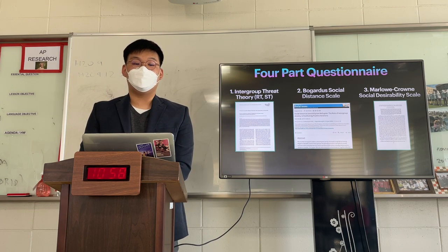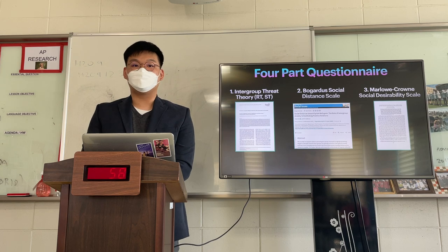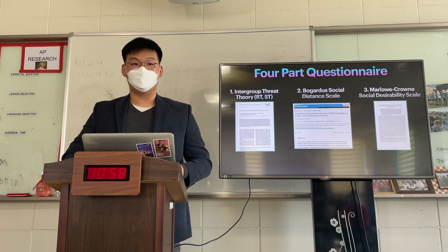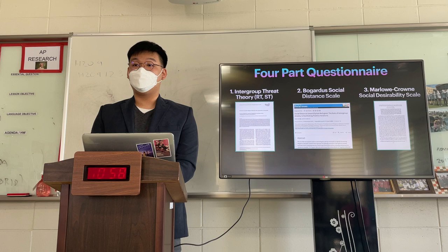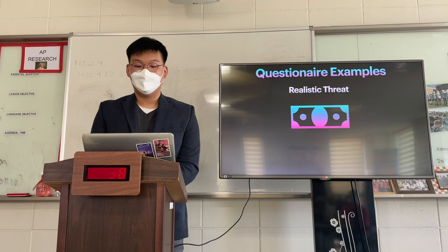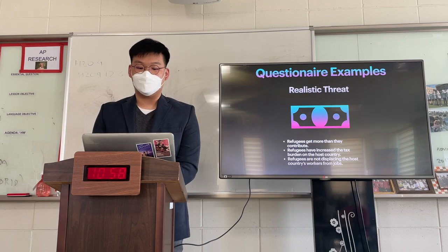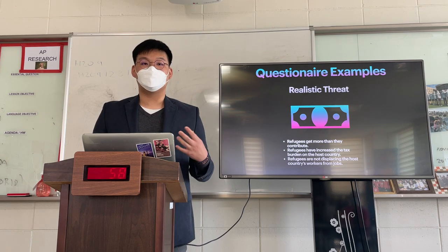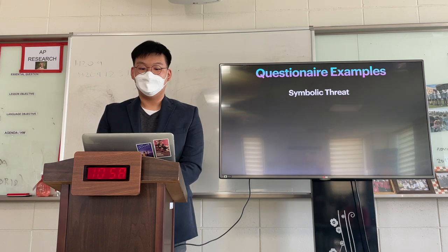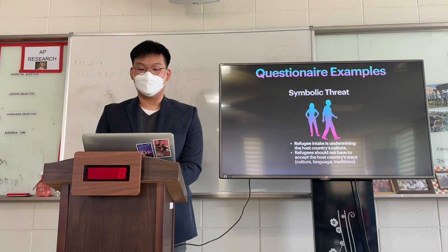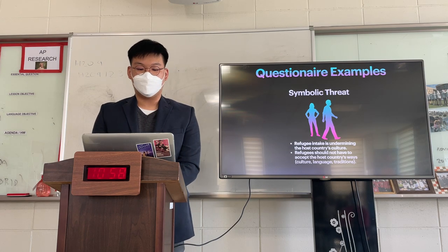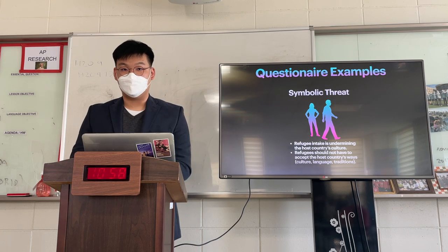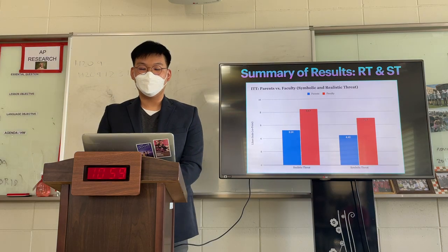Because this is a very local community, we cannot exclude factors of respondents being influenced by other members of society, which is why I added the social desirability scale. Some examples of realistic threat questions include: 'Refugees get more than they contribute' and 'Refugees have increased the tax burden on the host country.' Examples of symbolic threat questions include: 'Refugee intake is undermining the host country's culture' and 'Refugees should not have to accept the host country's ways,' referencing culture, language, and tradition.